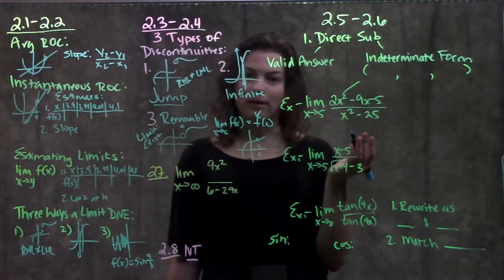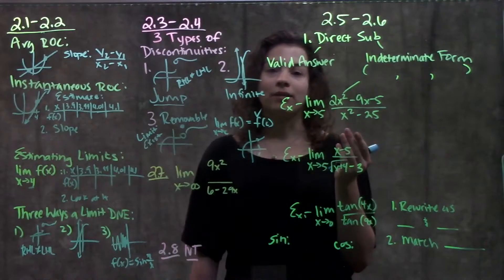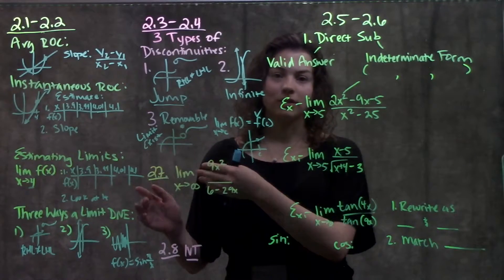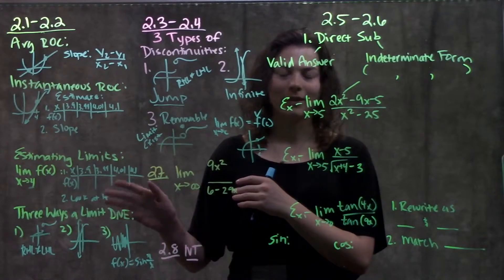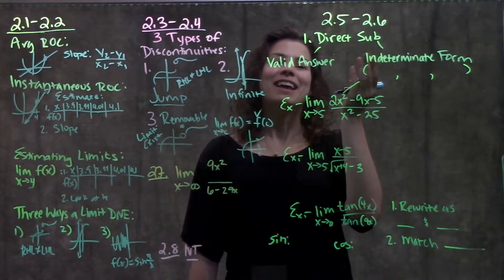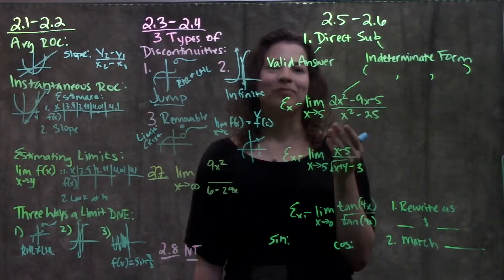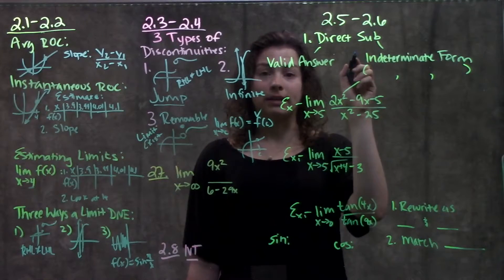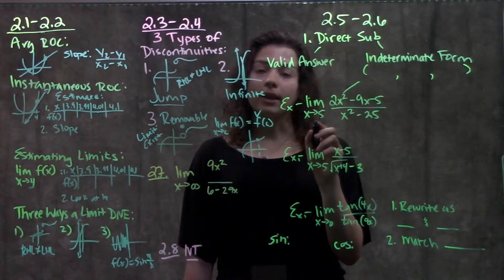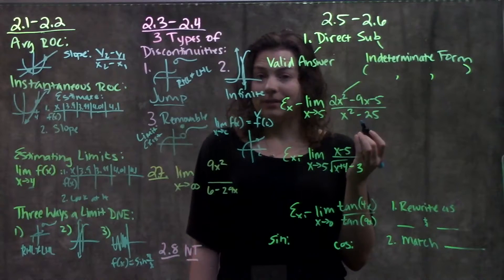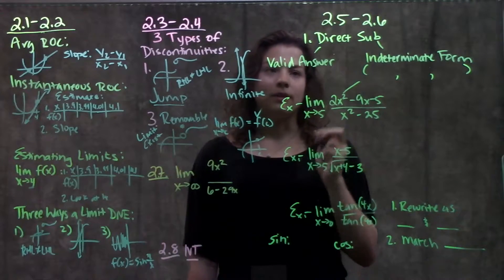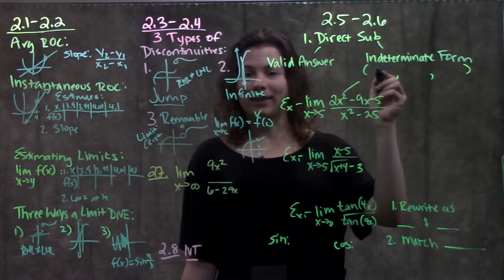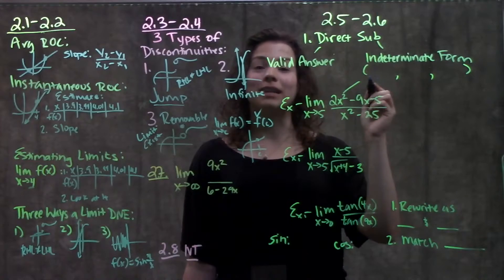Moving on to section 2.5 to 2.6, this is where we learn how to solve limits directly. We are done with estimating them by plugging in points closer and closer. Hallelujah, because that took forever. No one liked it. Now we moved on to the more math way of how to do these things. If we're solving a limit algebraically, our first step is to always try direct substitution. We just plug in our point of interest into the function, see what happens. Two things could happen. One, we get a valid answer. Good news, you're done.